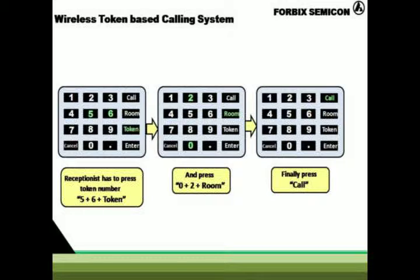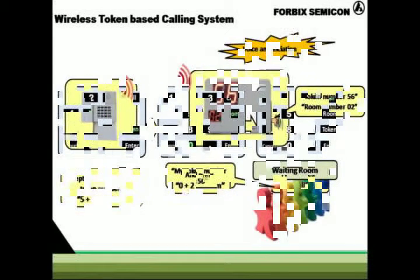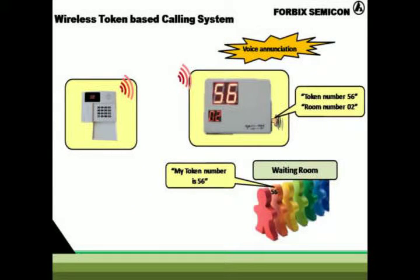The receptionist enters token number 56, followed by room number two, and then finally the call button. After entering token number 56 and room number two respectively, the information is displayed on the token display system along with voice enunciation.